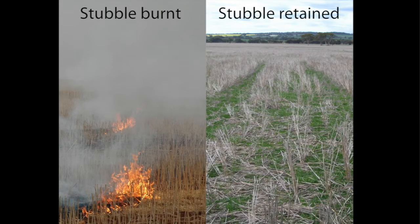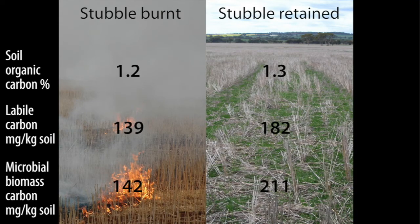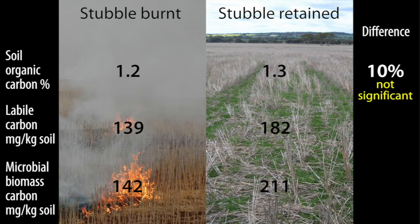Here's some data from a trial in WA that has been running for 18 years. After 18 years, a very simple trial — either burnt or retained — same carbon value. The retained system has more particulate organic matter or labile carbon, the stuff that microbes can eat, and it has a larger microbial population — 50% larger.